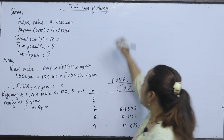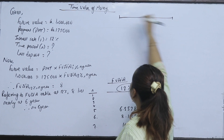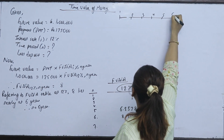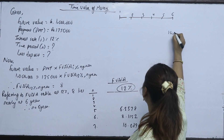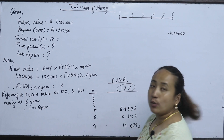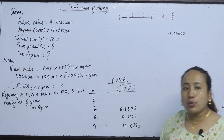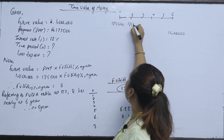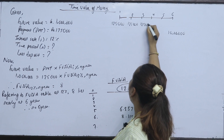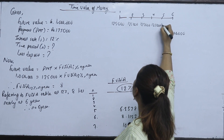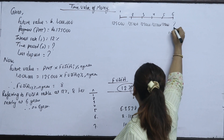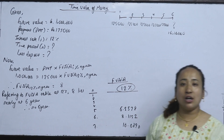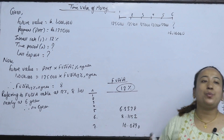In 6 years you get 10 lakhs. The question is: how do you deposit every year? 1 lakh 25 thousand. How do you deposit every year — 1,25,000 — less than the 6th year? How do you deposit every month? That is the question.